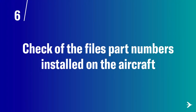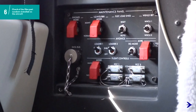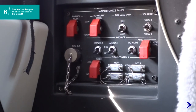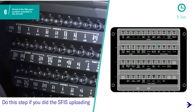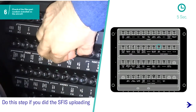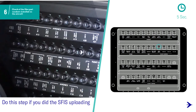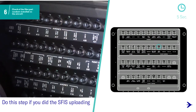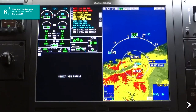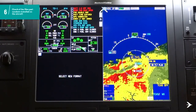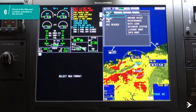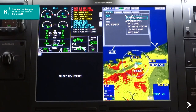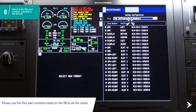In the sixth and last step, you will check the file part numbers that you have just installed on the aircraft. On the Maintenance panel, make sure the Loader 1 and Loader 2 switches of the Avionics system are in the off position. If you did the SFIS uploading, on the Circuit Breaker panel, open the SFIS Power 1 and, after approximately 5 seconds, close it. On the Database Status page, guarantee that the Documents and Tables, Databases, and IMS Software Files part numbers uploaded are shown with the correct status and part number.